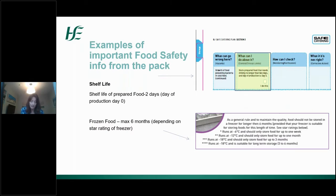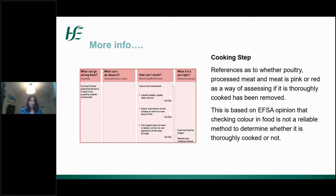Here are some important food safety information examples from the pack. The shelf life of prepared chilled food is two days, with day of production as day zero. Food produced on Monday must be disposed of by end of Wednesday. The shelf life of frozen food is a maximum of six months depending on the star rating of your freezer. In the cooking step, references to checking whether poultry, processed meat, and meat is pink or red as a way of assessing thorough cooking have been removed, based on EFSA opinion that colour is not a reliable method to determine whether food is thoroughly cooked.